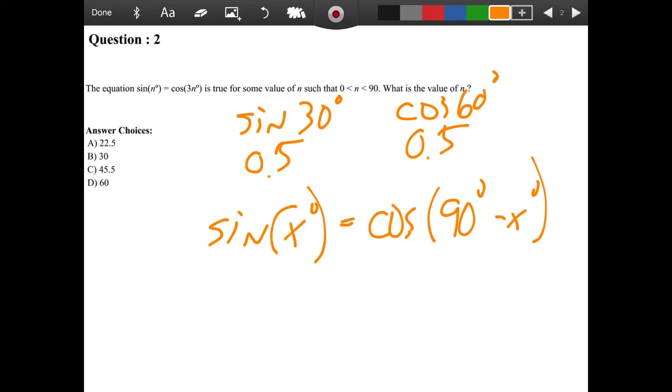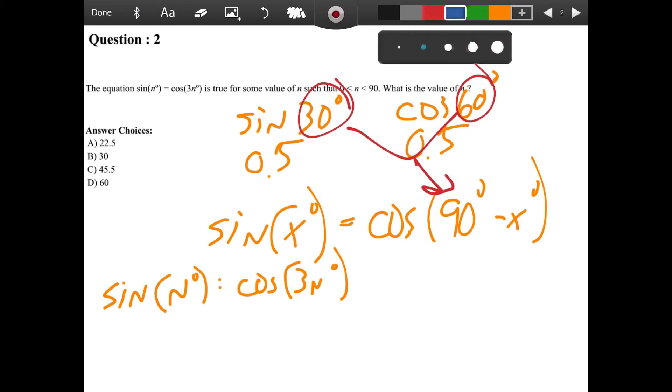So in this case, if we rewrite the problem, we have sine of n degrees equals the cosine of 3n degrees. Now, what that is is we know that these two angles, for example 30 and 60, when we combine those, they have to add up to 90.